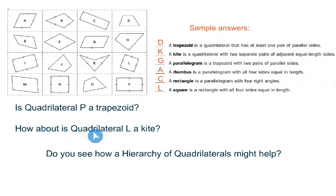And how about quadrilateral L? Is this a kite? So I would agree it doesn't look like our traditional kites, but a kite says a quadrilateral with two separate pairs of adjacent equal length sides. So are these adjacent? Oh, I'm sorry. Wait, am I on L? Here we are.